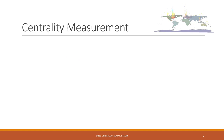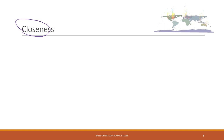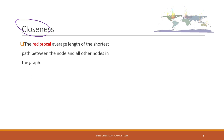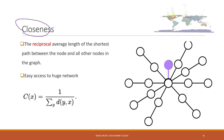Now let's continue with the other centrality measures. The first one that addresses the entire graph level is called closeness. The mathematical definition is that it is the reciprocal average of the length of the shortest path between the node and all the other nodes in the graph. Closeness captures the feature that if a node has easy access to the huge network, that node will have higher closeness.